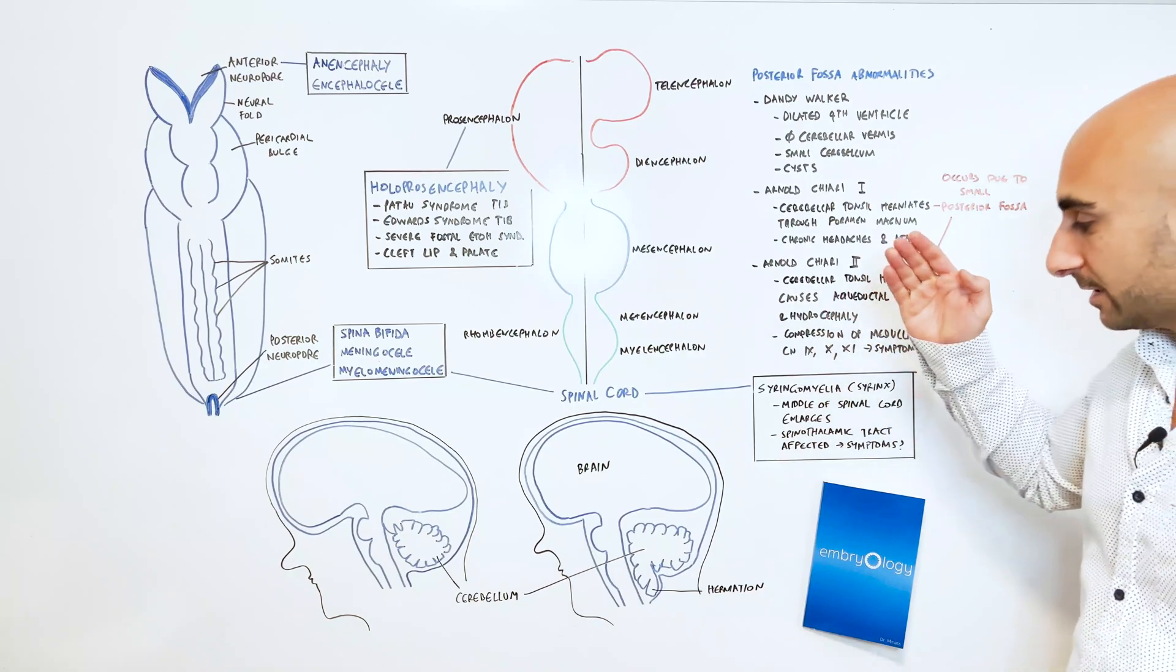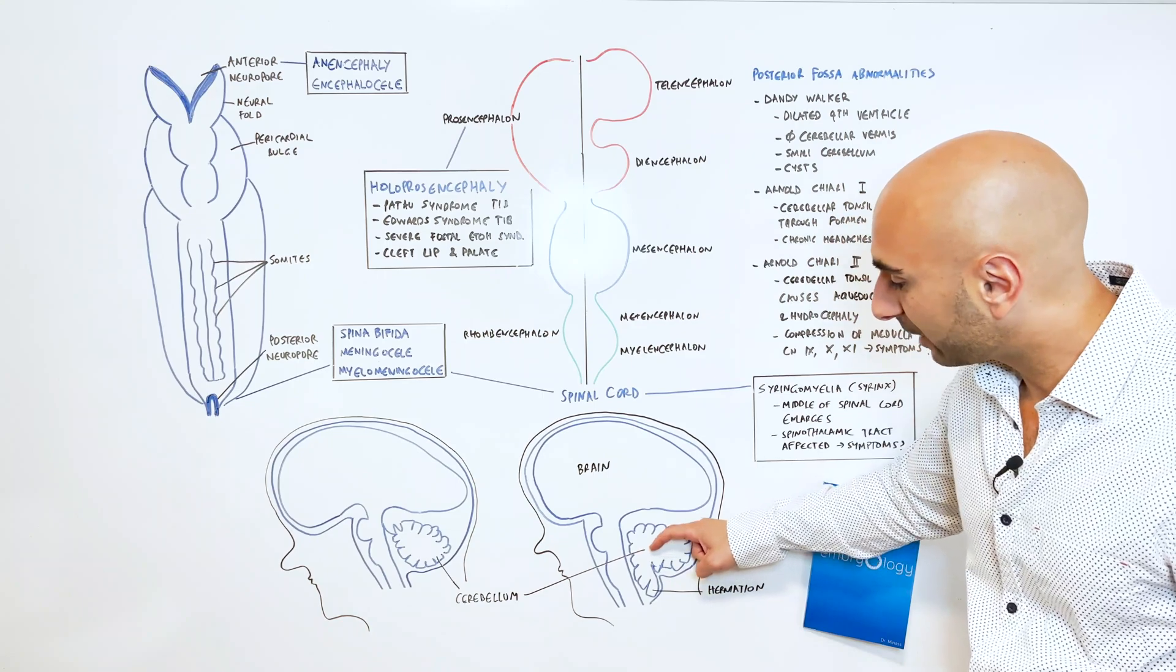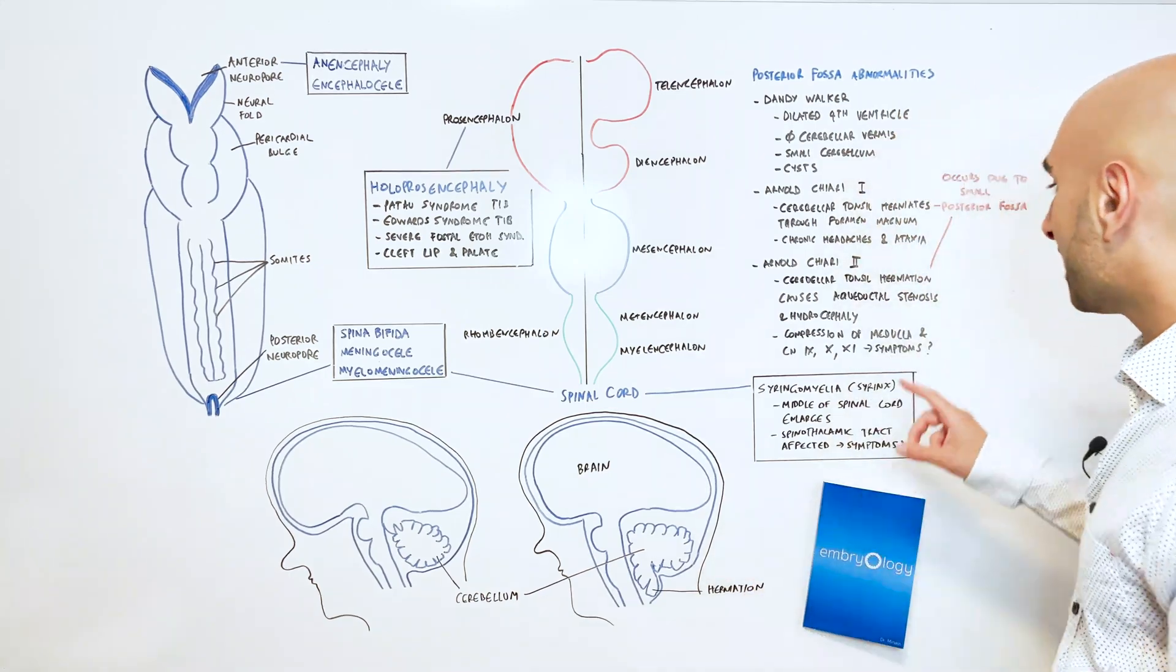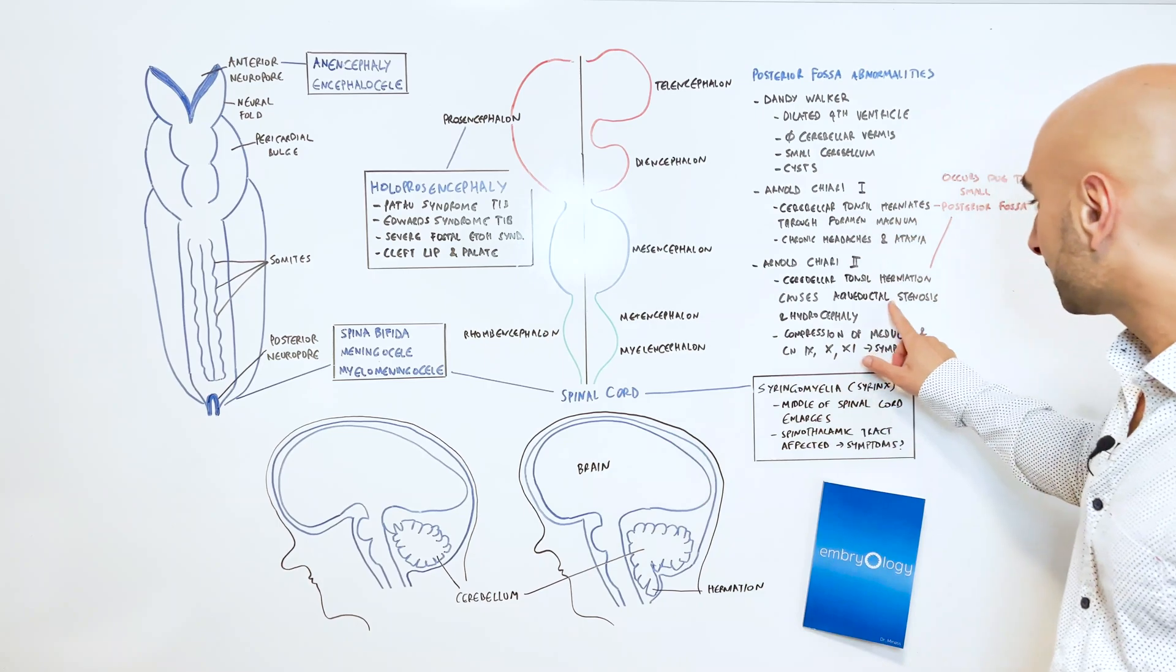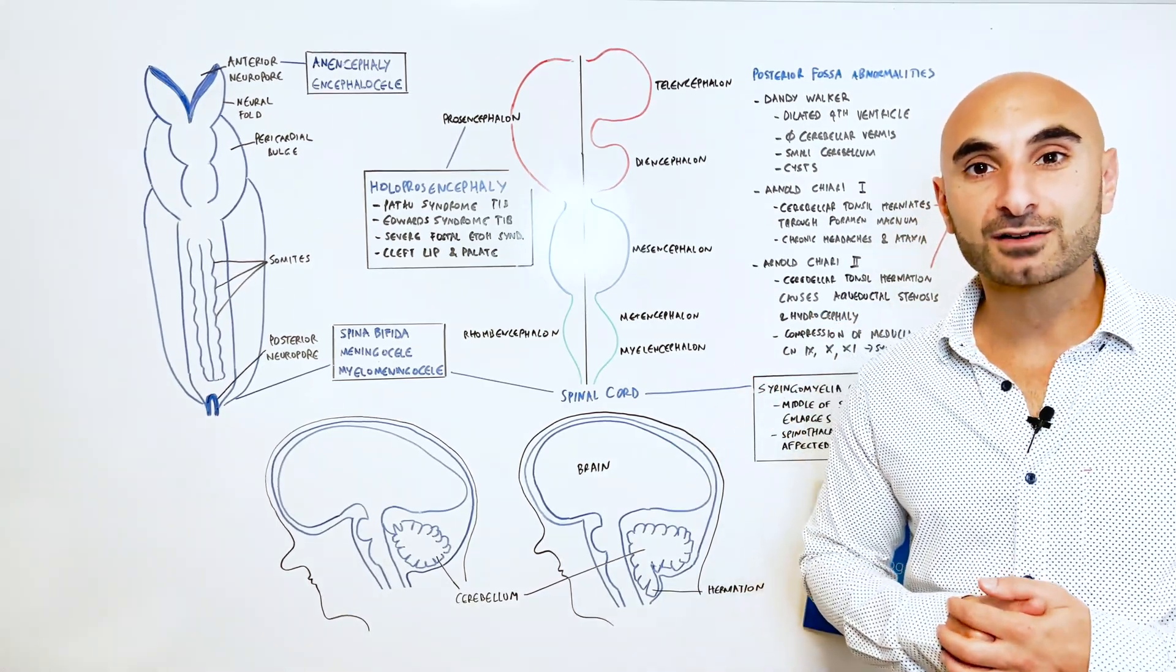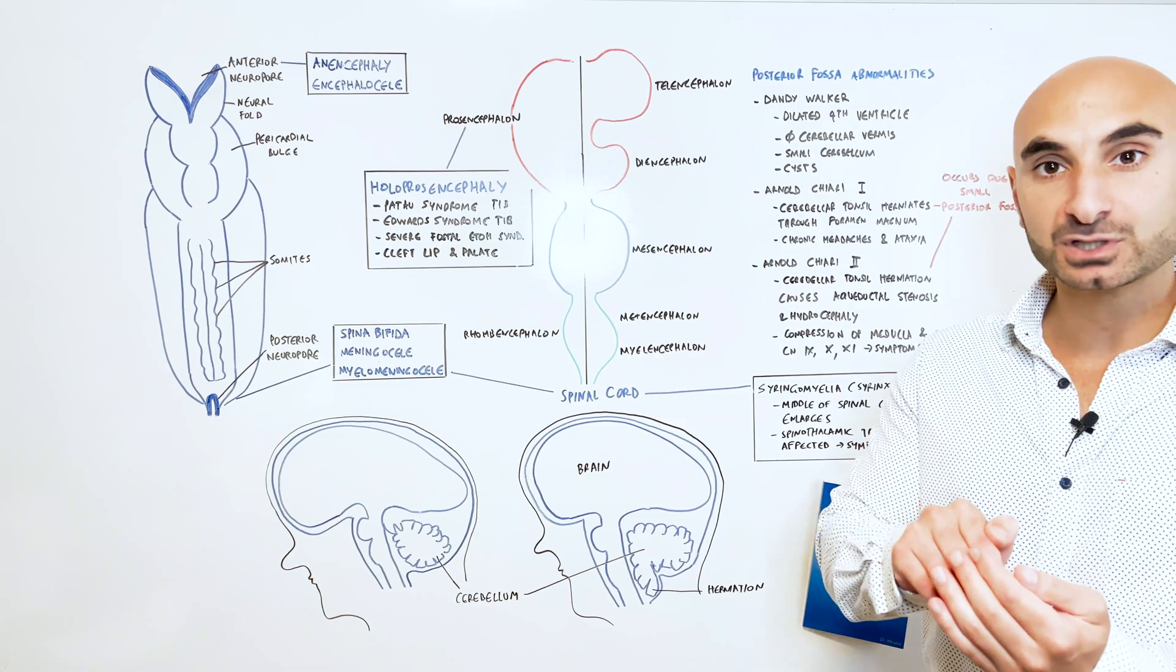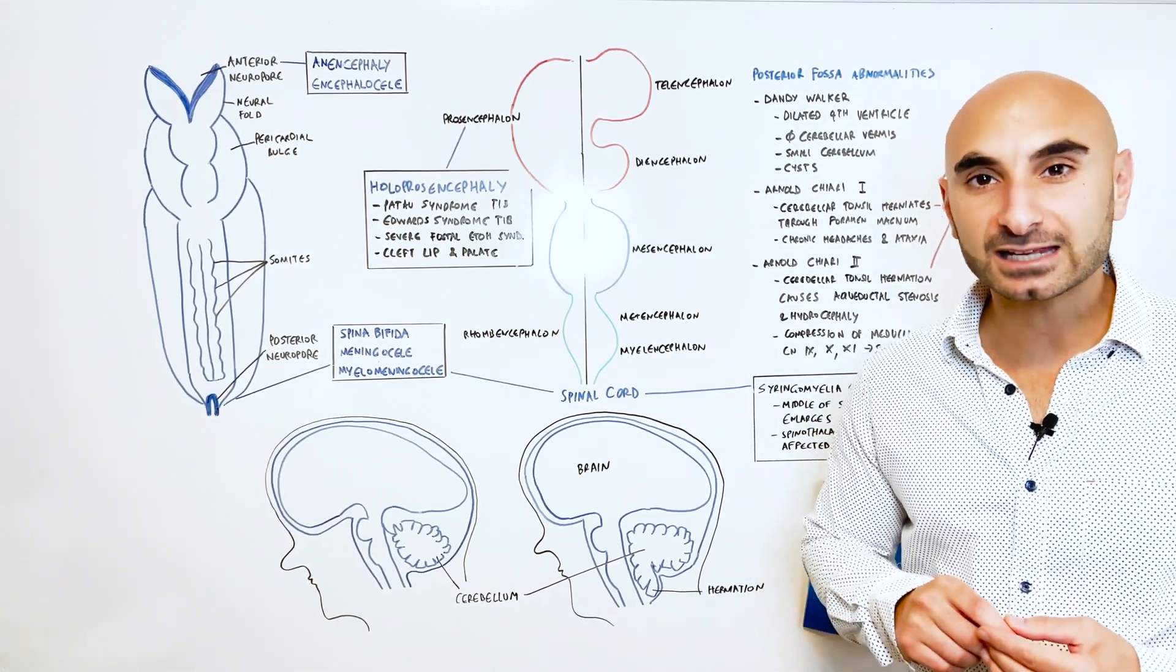Arnold Chiari 2 is the same thing. The cerebellar tonsil again herniates into the foramen magnum due to a small posterior fossa. And it's also associated with stenosis of the aqueduct and hydrocephaly. The signs and symptoms of Arnold Chiari 2 are associated by tonsillar herniation, compressing the medulla, and palsies of cranial nerves 9, 10, and 11.